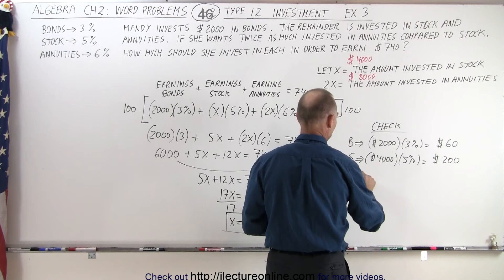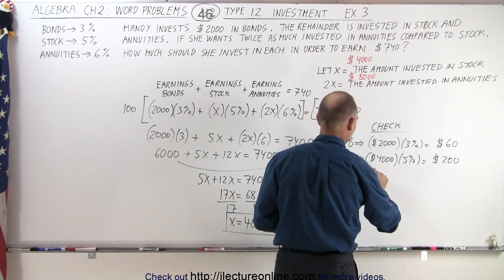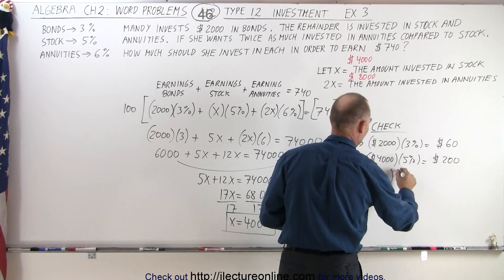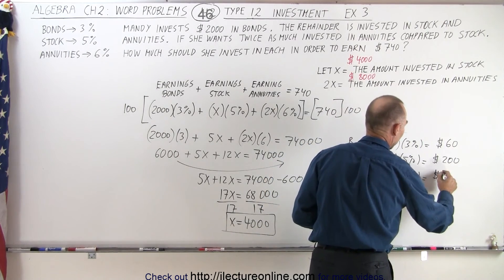And finally, when it comes to annuities, we take twice as much, or $8,000, and invest it at 6%, which gives us $480.